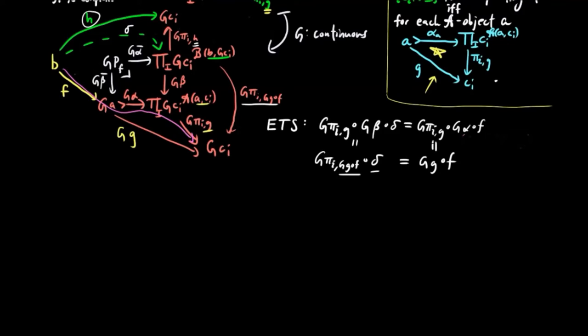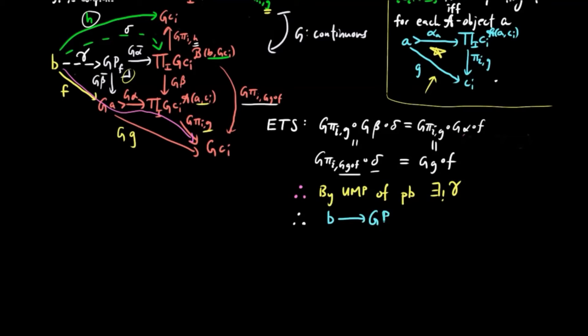Therefore we have equality, and by the universal mapping property of the pullback, there exists a unique morphism gamma such that the diagram commutes. Therefore F factorizes through G beta-bar. To finish the proof, we need to show that there exists just a set of these A-objects PF, constructed as the above pullback for each such morphism F with domain B.